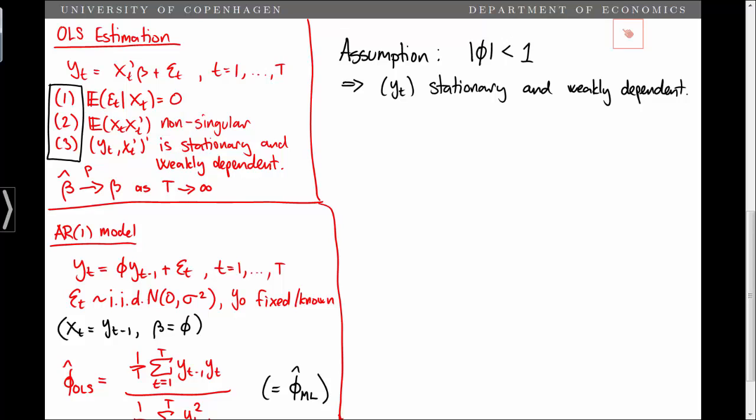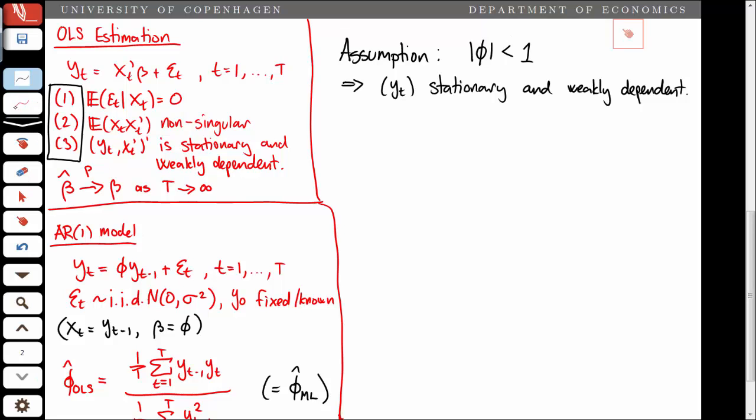We start out by verifying that the conditional expectation of epsilon t given yt minus 1 is equal to 0 such that condition 1 is satisfied.